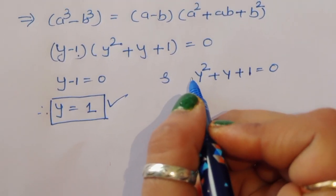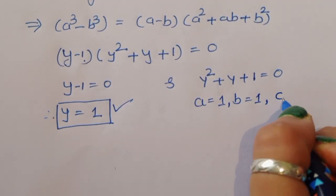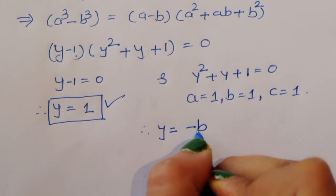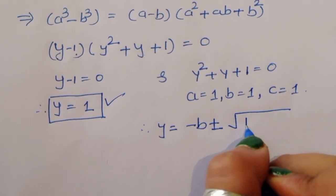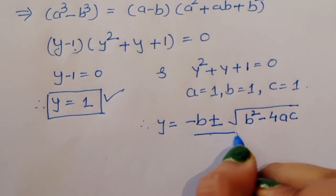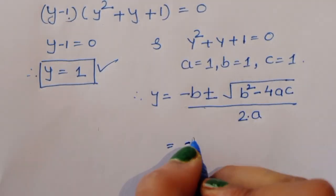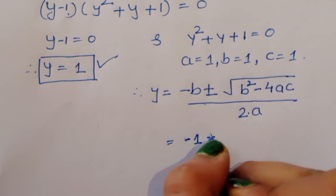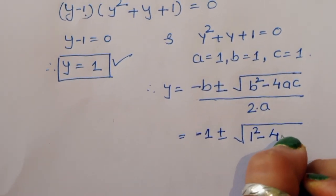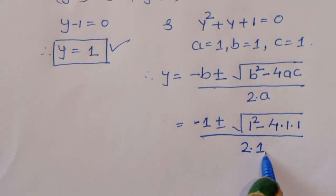For the second equation y² + y + 1 = 0, the coefficients are a = 1, b = 1, and c = 1. Using the quadratic formula: y = (−b ± √(b² − 4ac)) / (2a), we get y = (−1 ± √(1 − 4·1·1)) / (2·1).